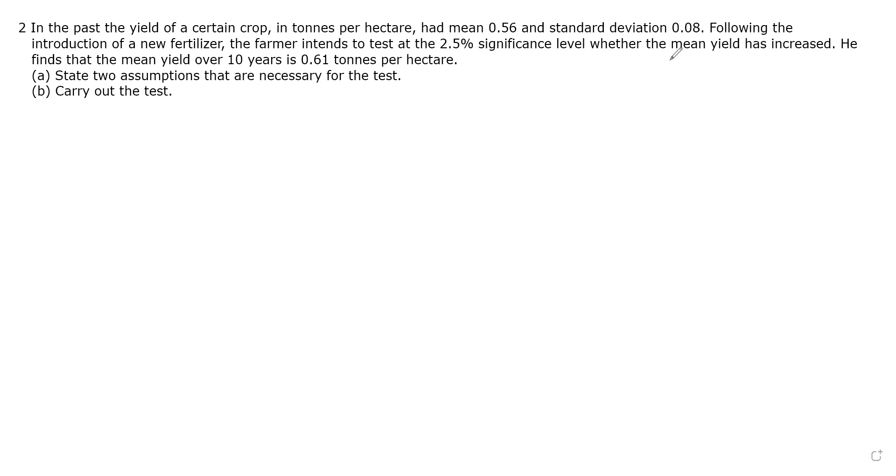In the past, the yield of a certain crop had a mean of 0.56 and a standard deviation of 0.08. Following the introduction of a new fertilizer, the farmer intends to test at the 2.5% significance level whether the mean yield has increased, which will give you a one-tail test. He finds that the mean yield over 10 years is 0.61.